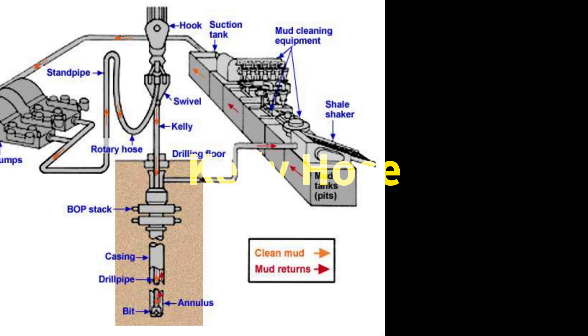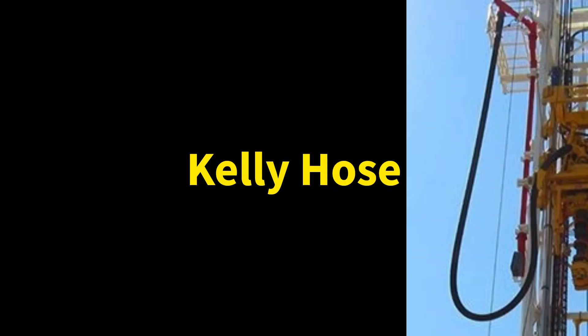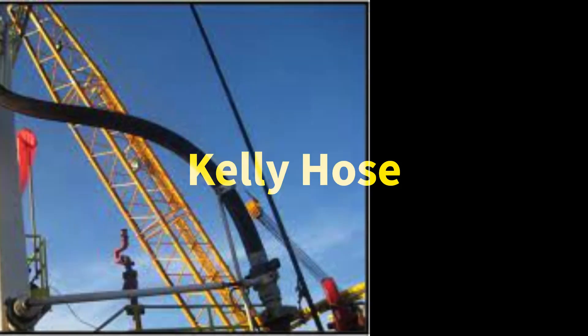The kelly hose is a flexible, high-pressure hose that connects the top of the standpipe with a gooseneck on the swivel. The kelly hose allows for flexibility and movement of the swivel during drilling operations.